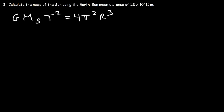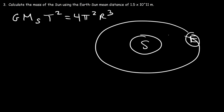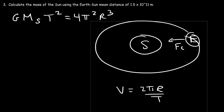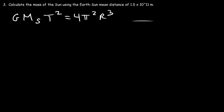We derived this equation with the Sun at the center and the Earth orbiting it, setting centripetal force equal to gravitational force, and replacing velocity with 2πR/T. From that equation, we solve for the mass of the Sun M_sun.